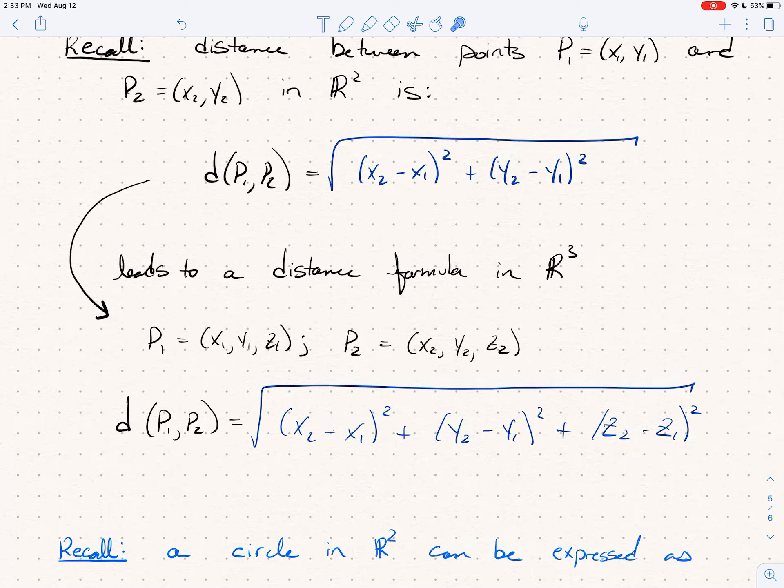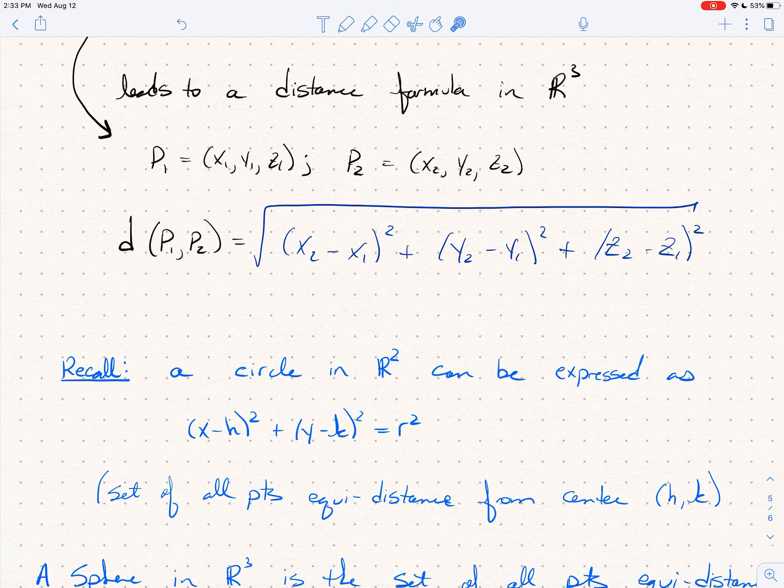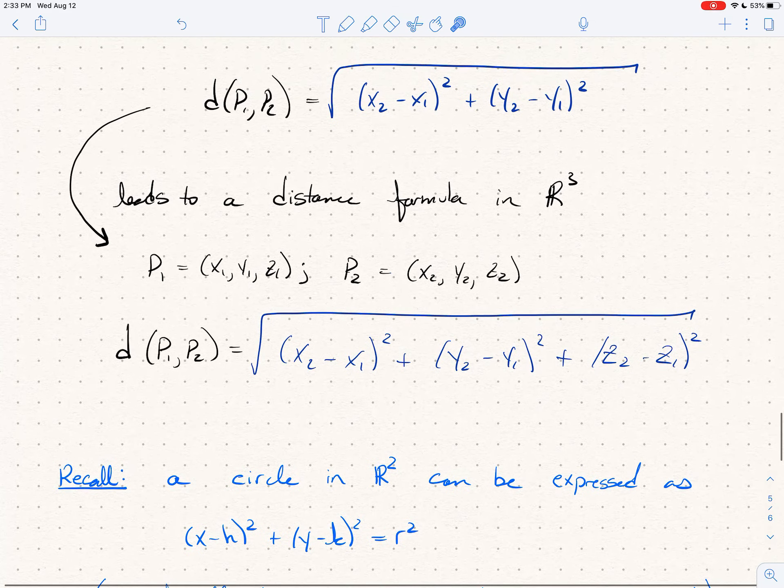So you'll need the distance formula to work out some of your homework problems. Last thing: recall that a circle in two space can be expressed as (x - h)² + (y - k)² = r². If you look at the set of all points (x, y) that lie on a circle of radius r centered around (h, k), then that's the equation.